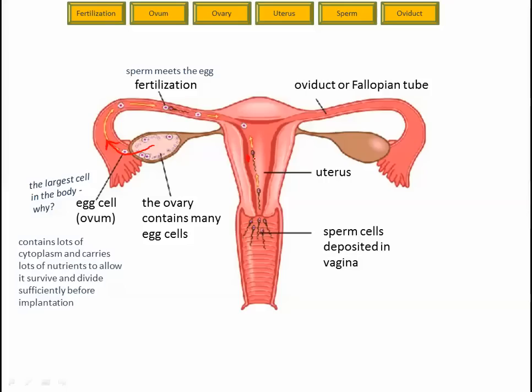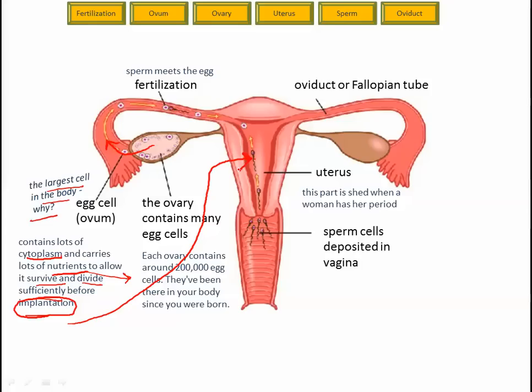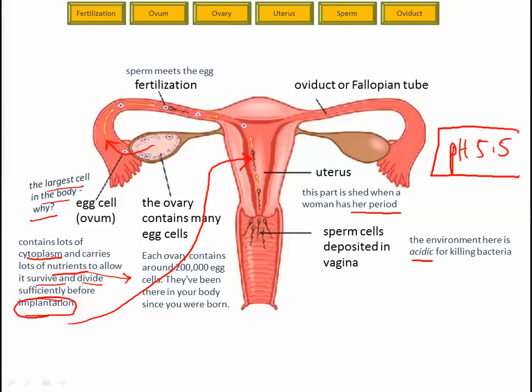Some interesting stuff about the egg cell: it has lots of cytoplasm and it is the biggest cell. Why? Lots of nutrients — food essentially — which allows it to survive and divide sufficiently before implantation in the uterus. Each ovary contains about 200,000 egg cells, and they've been in the body since girls were born. The uterine lining is shed when a woman has her period — we're going to talk about the menstrual cycle in more detail. Finally, the vagina is an acidic environment, similar to our skin pH of about 5.5, and one purpose is to kill some bacteria.